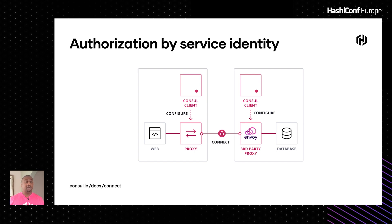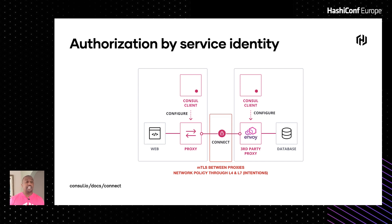We have two nodes, each with some kind of service or application — web on the left and database on the right — and each has an Envoy proxy running as a sidecar. Envoy is responsible for communicating with other proxies. Adding Consul Connect gives us mutual TLS, which authenticates the Envoy proxy on behalf of the database and also authenticates the proxy for the web application — that's how we verify the identity of each machine.